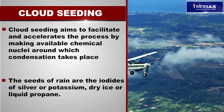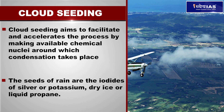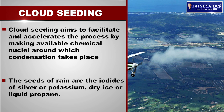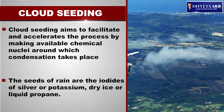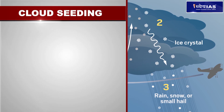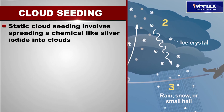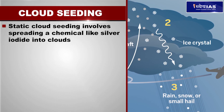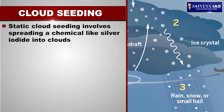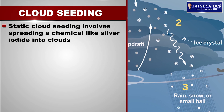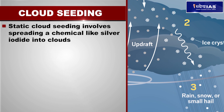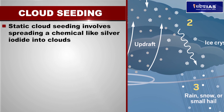These seeds can be delivered into the clouds by planes or by simply spraying from the ground. There are three cloud seeding methods: static, dynamic, and hygroscopic. Static cloud seeding involves spreading a chemical like silver iodide into clouds.